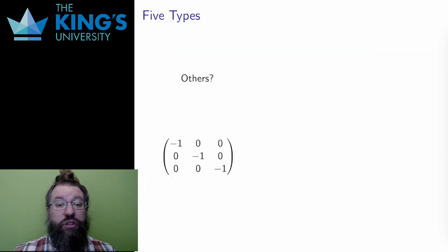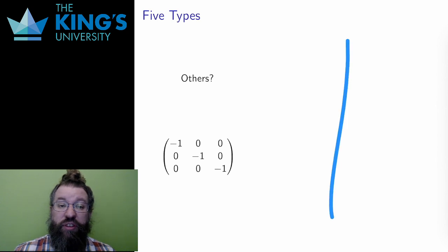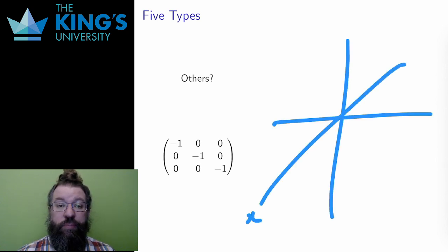Finally, there are other transformations in R3 that simply don't fit. Sometimes these are even relatively simple transformations. This transformation multiplies all coordinates by negative 1. You might think this was a rotation, like it was in R2, or maybe a reflection.